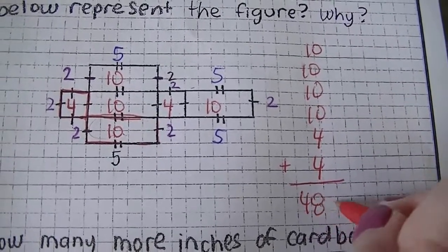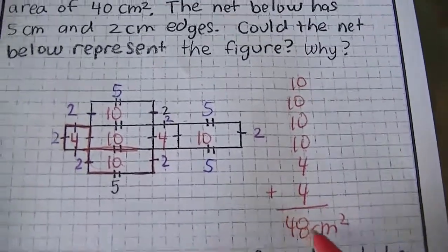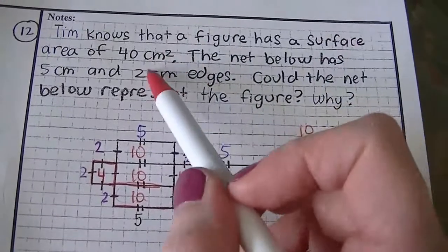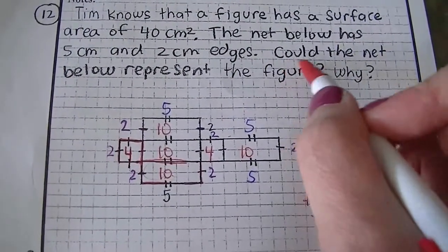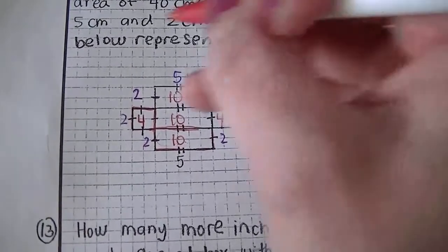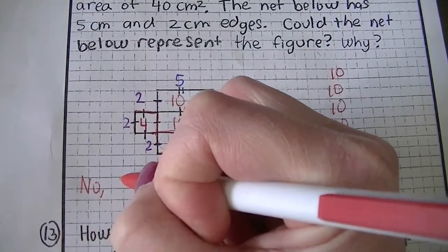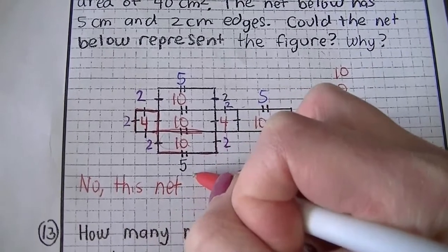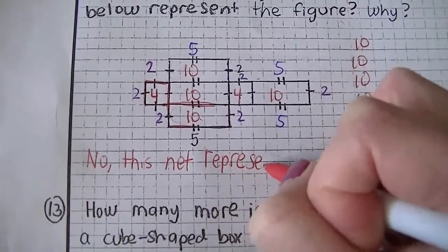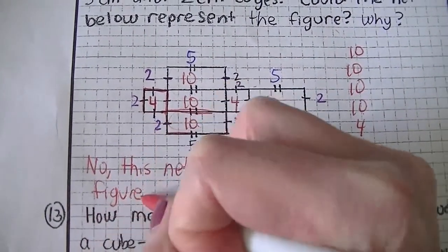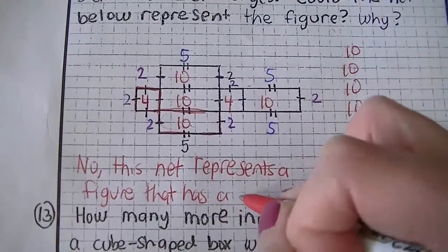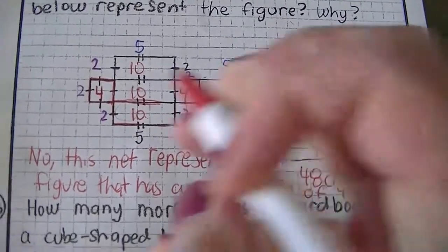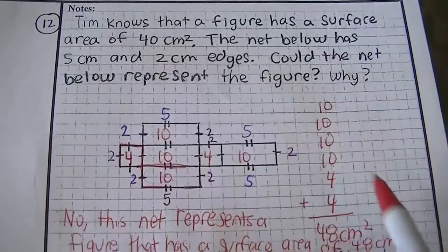Does this net match what Tim is talking about? No — because Tim's figure has a surface area of 40 centimeters squared, and this net has a surface area of 48 centimeters squared. So the answer is: no, this net represents a figure with a surface area of 48 centimeters squared, which does not match 40 centimeters squared.